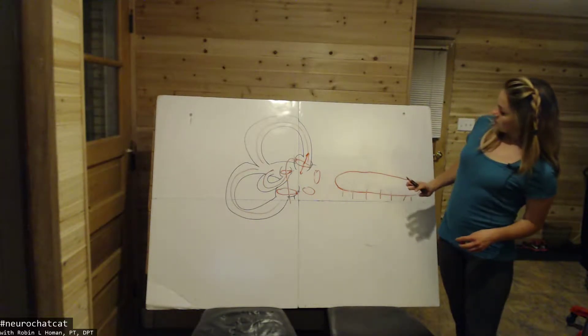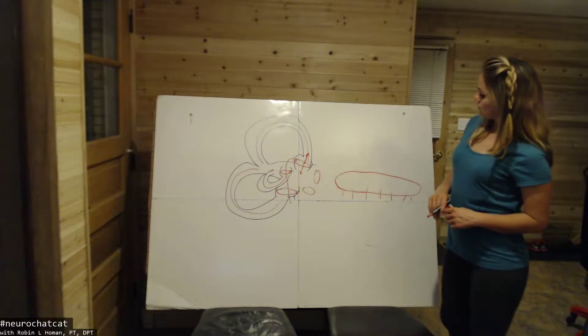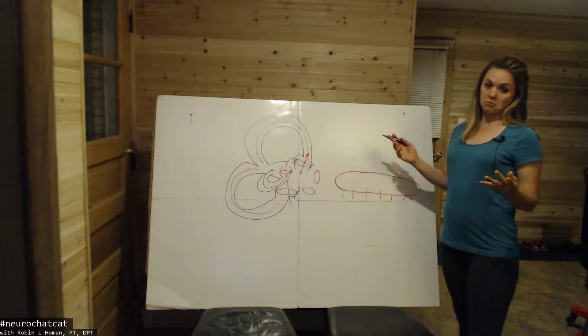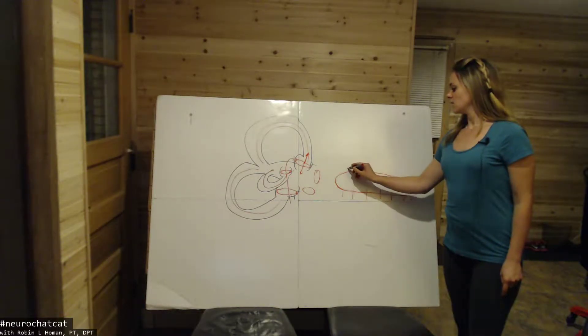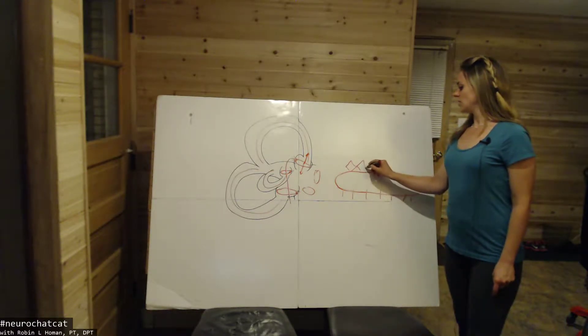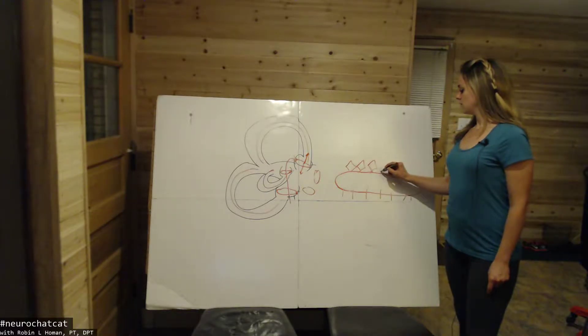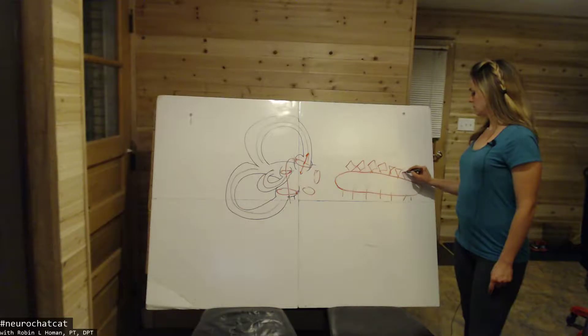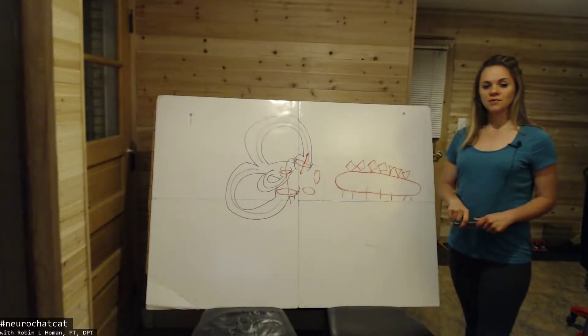On top of this utricle sits these calcium carbonate crystals called the otoconia on top of the otolith. And they chill out like so. And I started to make a triangle. Whatever. Needless to say.